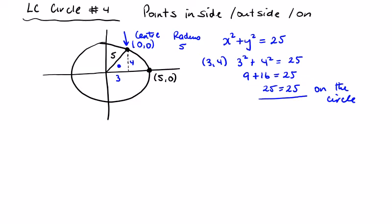Let's check (1,1) and see what happens when we put it into our equation of a circle. 1² + 1² = 25. Of course it doesn't equal 25. 2 is less than 25, so when it's less than we can say the point is inside.